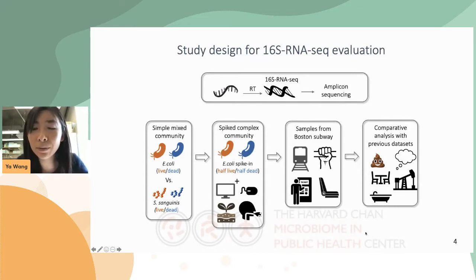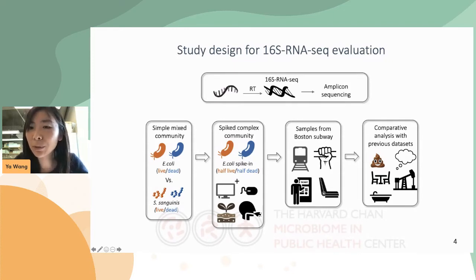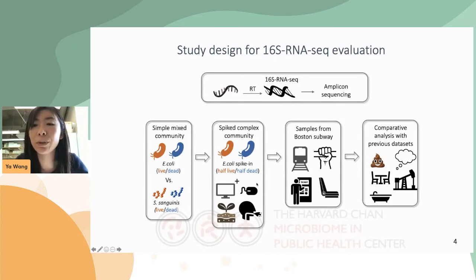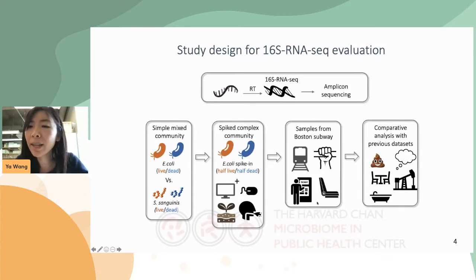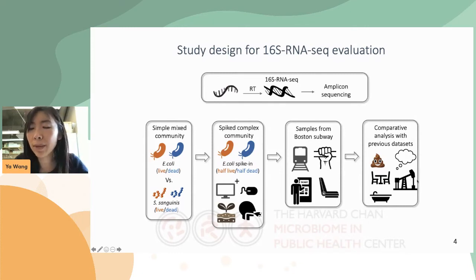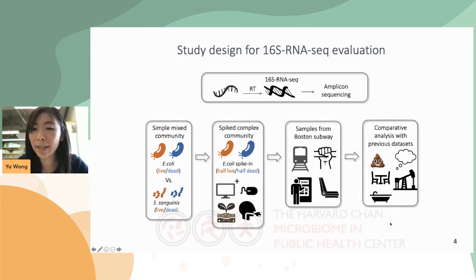To assess its performance, we first applied this technique in synthetic communities of E. coli and Streptococcus sanguinis. After that, we validated it in natural microbial communities from computer screens, mice, soil, and human saliva, spiked with known concentrations of E. coli as controls to assess quantitative accuracy. We then used microbial samples from the Boston subway system to see how they performed in real built environments, and did a comparative analysis using previously published datasets to check for consistency across different studies and sample types.